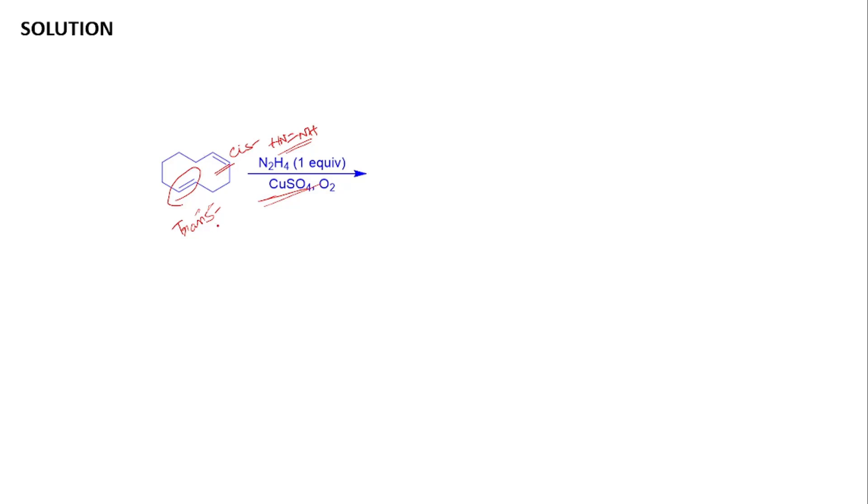But as we have mentioned, trans alkenes undergo hydrogenation faster than cis alkenes. So here selectively, this alkene will be reduced and as only one equivalent is given, there is no possibility of further reduction of this cis alkene. The final product will be this cyclic alkene product.